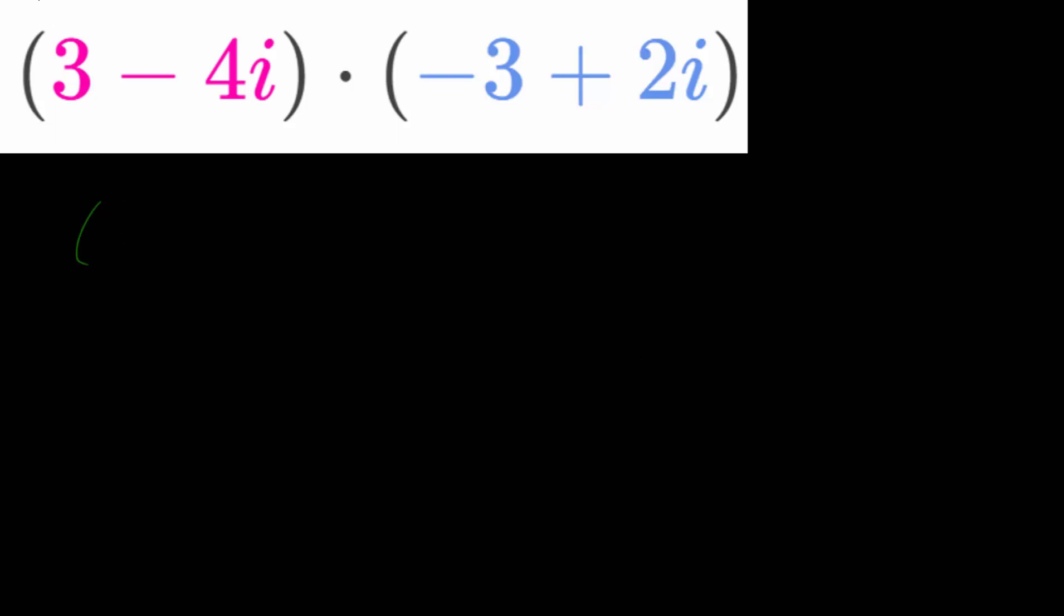So remember, if we have x plus 2 multiplied by 3 minus x, we multiply these two binomials, where x in this case can be a real number, by distribution. We distribute the x to both, then we distribute the 2 to both.